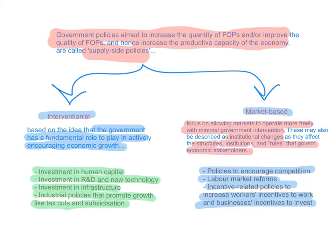Both Keynesians and New Classical or Monetarist Economists encourage the use of supply-side policies. The difference is that New Classicals prefer only supply-side policies — they are not proponents of policies to change the level of aggregate demand, believing it will only affect the average price level and not long-run aggregate supply. Keynesians, on the other hand, believe in a combination of supply-side policies and demand-side policies.